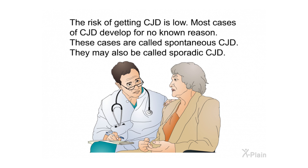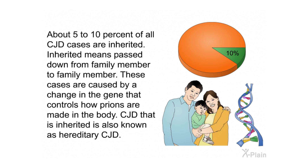The risk of getting CJD is low. Most cases of CJD develop for no known reason; these are called spontaneous or sporadic CJD. About 5–10% of all CJD cases are inherited, meaning passed down through families. These are caused by a change in the gene that controls how prions are made in the body, and are known as hereditary CJD.